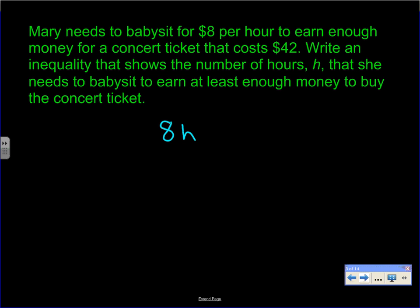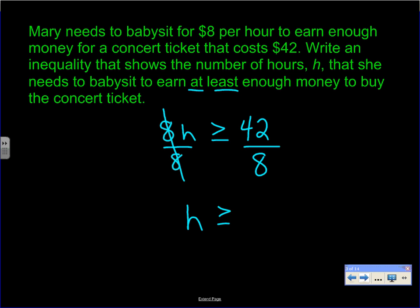She has to earn at least 42 dollars, so 8h must be greater than or equal to 42. If she earns exactly 42 dollars she can still buy the ticket. Dividing both sides by 8, we get h is greater than or equal to 42 divided by 8, which is 6. So Mary has to work six or more hours to go to her concert.